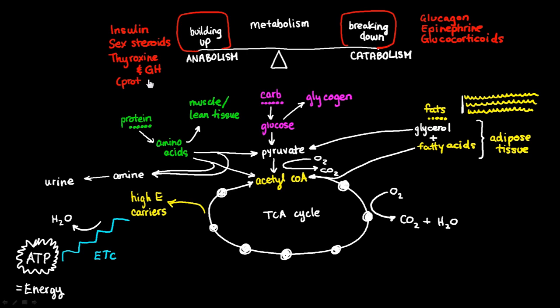Those guys favor the anabolism or the building up of protein stores. So protein synthesis is favored by these guys. But they also work on this side—they favor the breakdown of fats and carbohydrate stores. Thyroxin and GH favor the breaking down of our fat and carbohydrate stores.